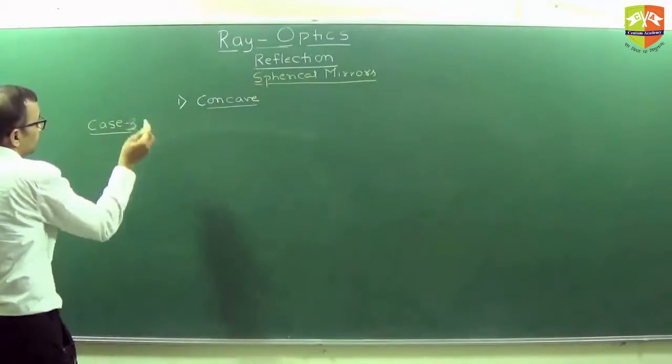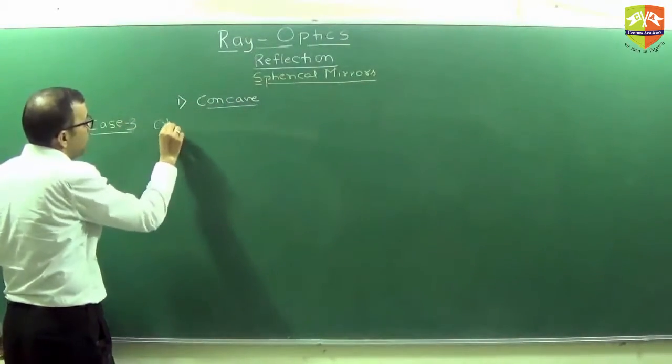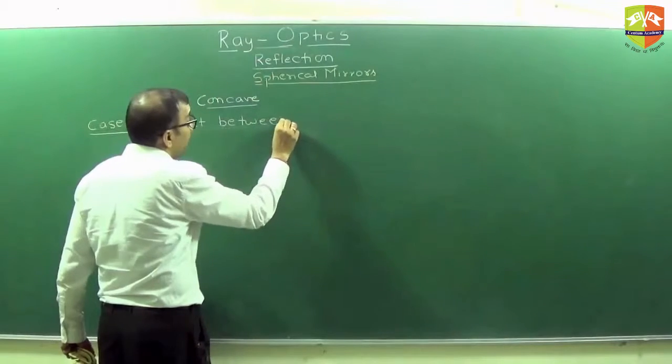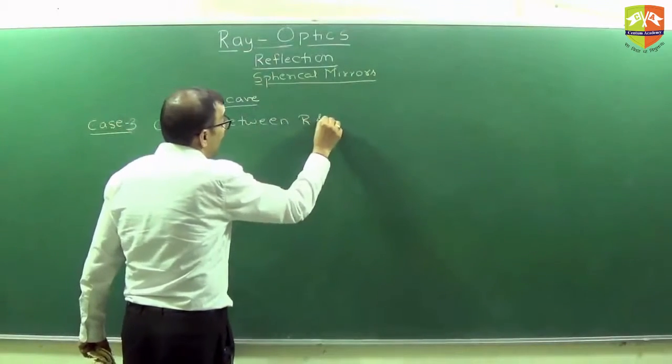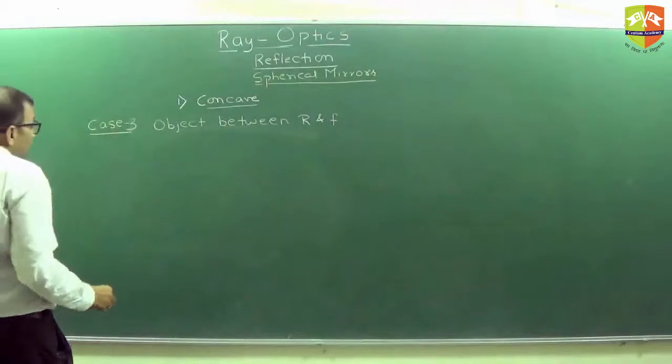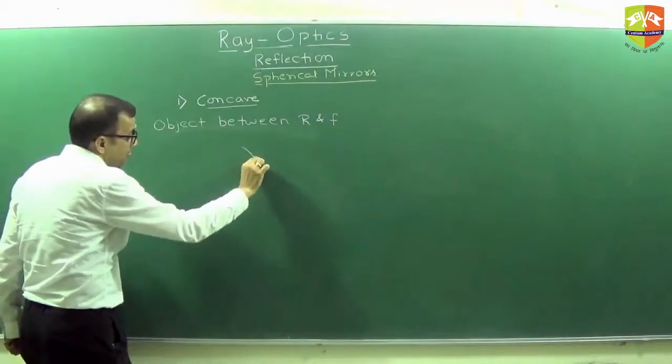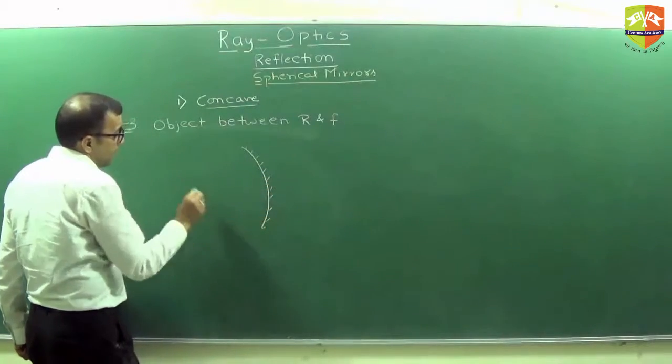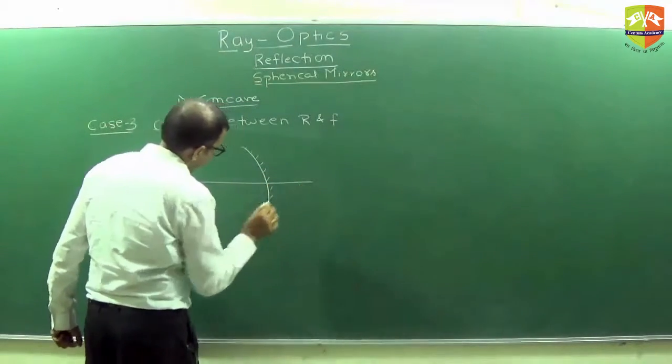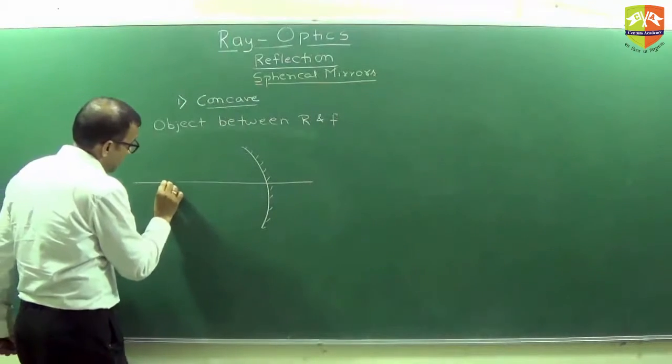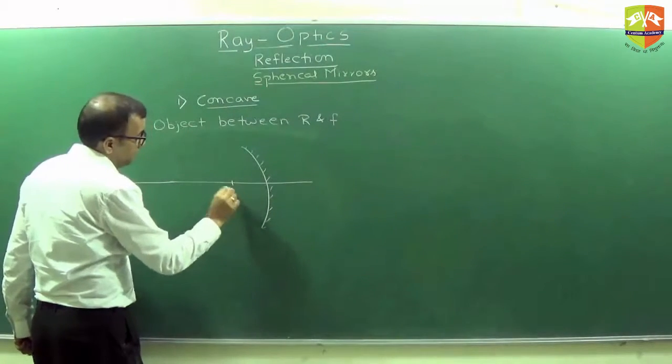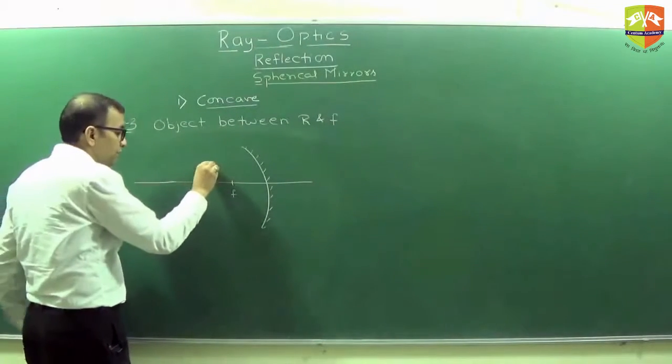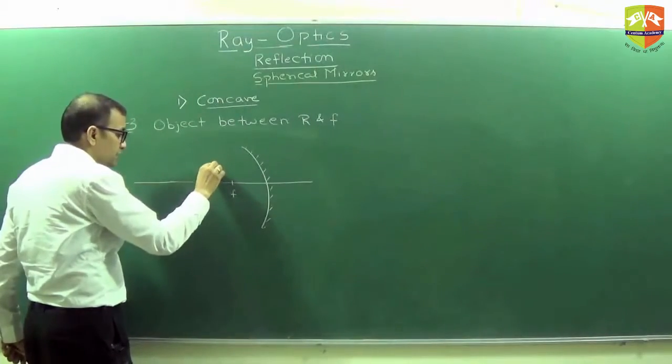Same thing, case number 3: object between R and F. This is R, this is F. You have an object like this.